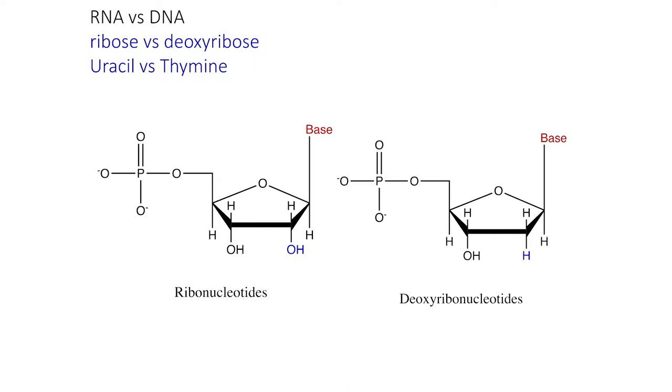That hydroxyl group on the 2 prime is a reactive group, and RNA is much less stable than DNA. So DNA is a better storage material for the genes because it doesn't break down as much as RNA because it doesn't have this reactive 2 prime hydroxyl.